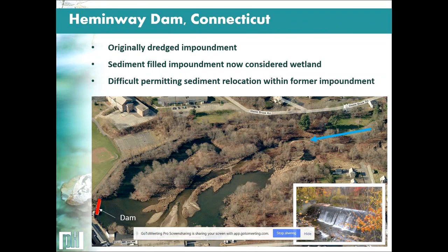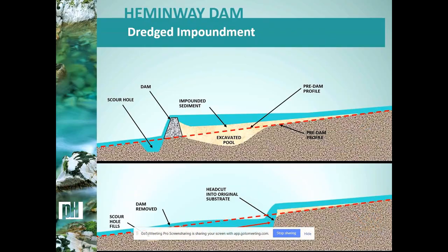The Hemingway Dam in Connecticut is an actively worked project hoping to move toward removal. It's an interesting site because it was an excavated impoundment — the original river ran around the northern part, and the channel was redirected into the excavated pond, which has since filled with sediment. The issue with removing a dam on an excavated pond is that post-removal you risk not just mobilizing impounded sediment, but head-cutting into original substrate. In this case, the approach is to re-utilize the old channel rather than the excavated pool area, to maintain grade on the system.